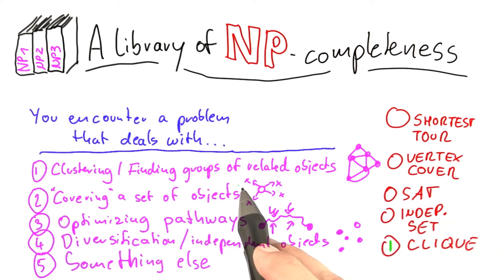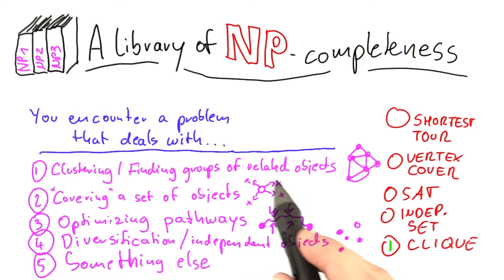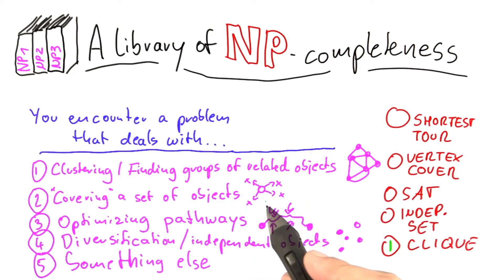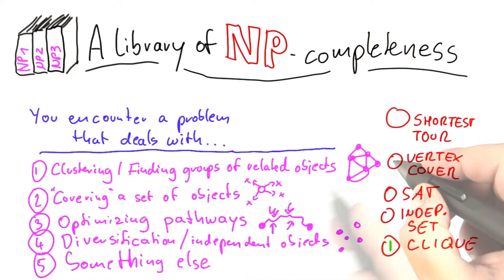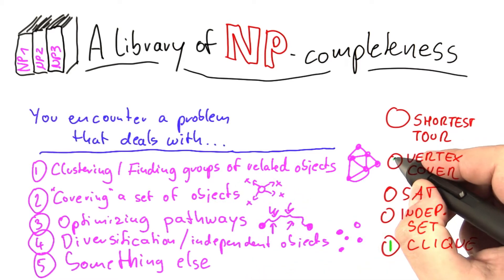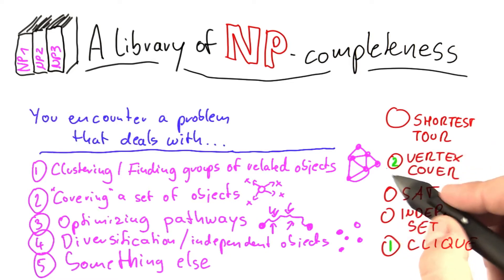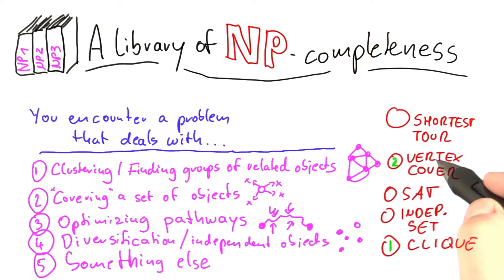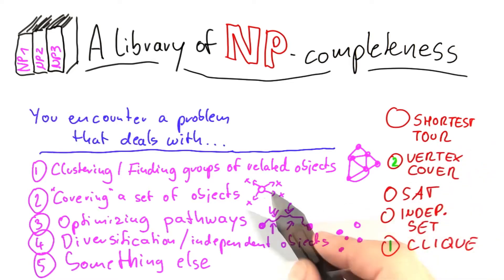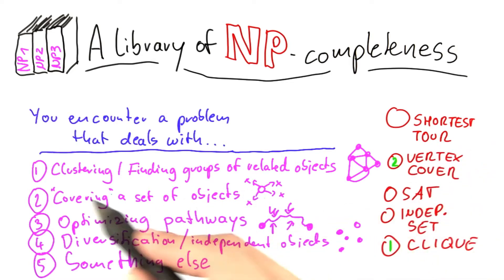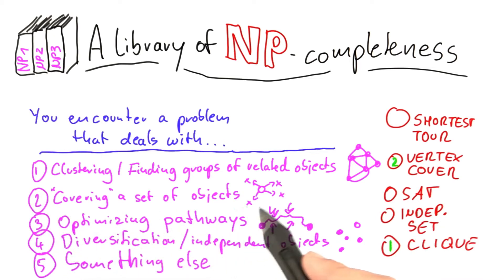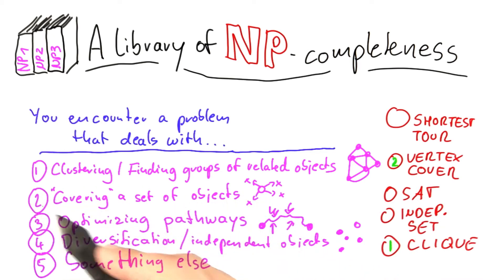Covering a set of objects — that is basically the problem that Alice was looking at for her telecommunications company. So vertex cover is usually a good idea. And there are certain generalizations of vertex cover called hitting set that can also be a useful tool in proving that problems like this are NP-complete.